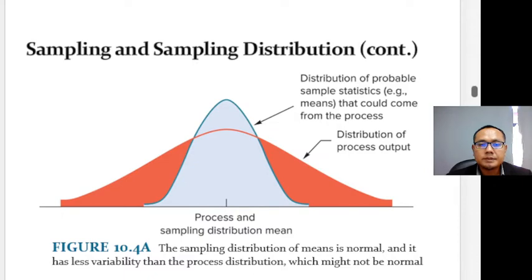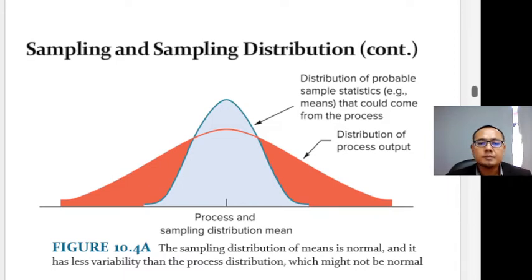This figure illustrates the sampling distribution and the process distribution. Three important points: both distributions have the same mean; the variability of the sampling distribution is less than the variability of the process; and the sampling distribution is normal — even if the process distribution is not normal.